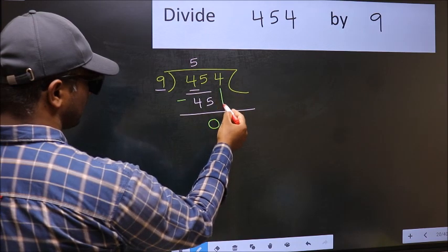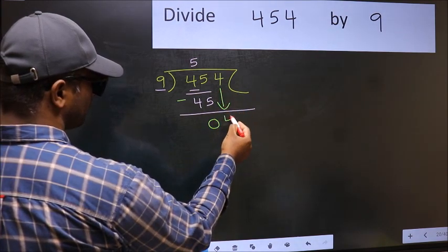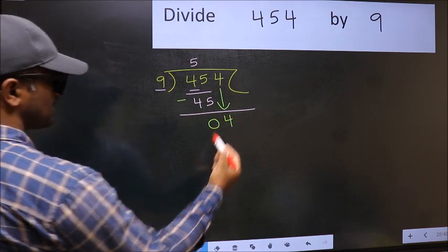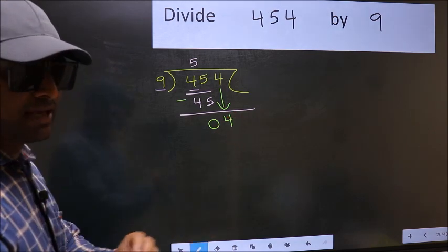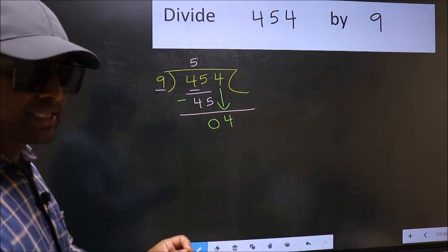After this, bring down the beside number. So 4 down. After this step, the mistake happens. And the mistake is this.